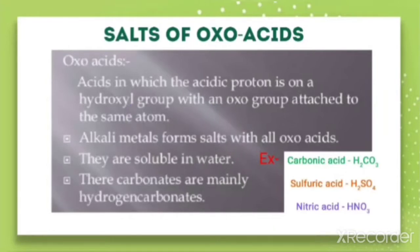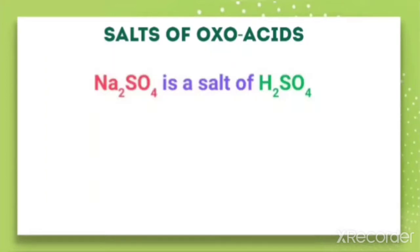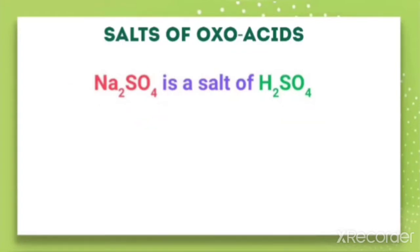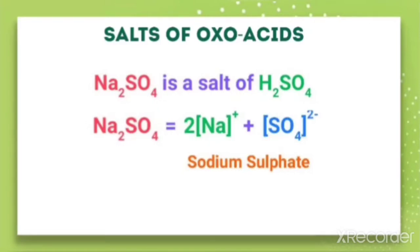All the alkali metals form salts with all oxoacids. They can easily form salts with oxoacids, and these salts are soluble in water. Their carbonates and hydrogen carbonates are important examples. For instance, Na₂SO₄ is a salt of sulphuric acid — Na is the alkali metal forming a salt with sulphuric acid, an oxoacid, giving sodium sulphate Na₂SO₄. In water, this salt ionizes to form sodium ion and sulphate ion.